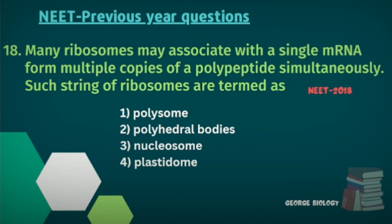Question seventeen: Many ribosomes may associate with a single mRNA to produce multiple copies of a polypeptide simultaneously. Such a string of ribosomes is termed as — polysome, polyhedral bodies, nucleosome, or plastidome. A single mRNA having many ribosomes is called a polysome — that is the answer.